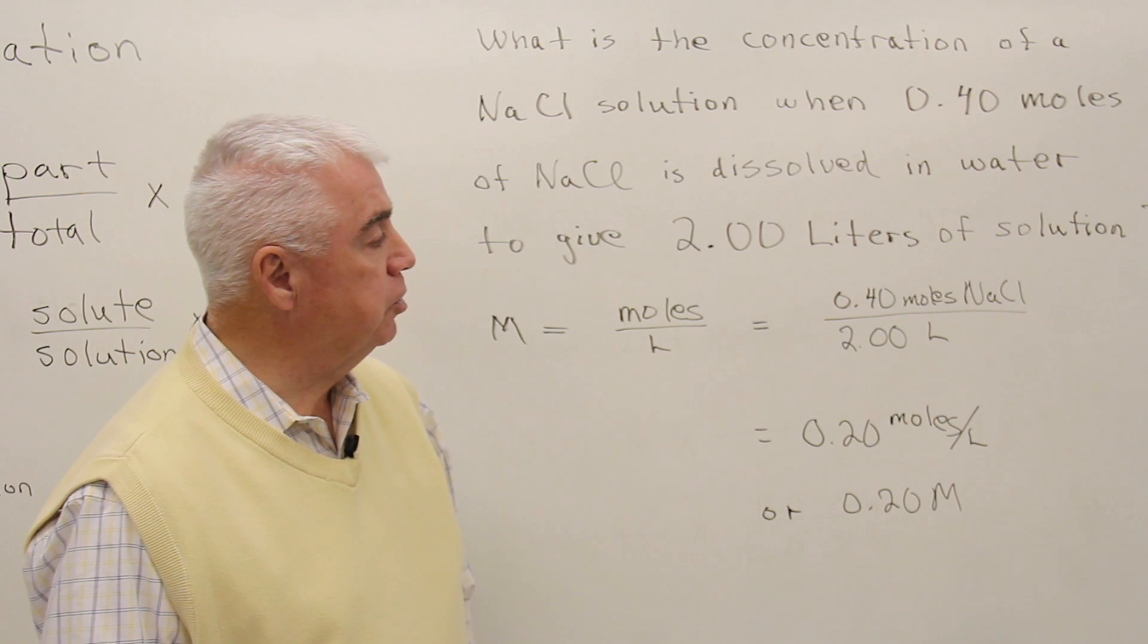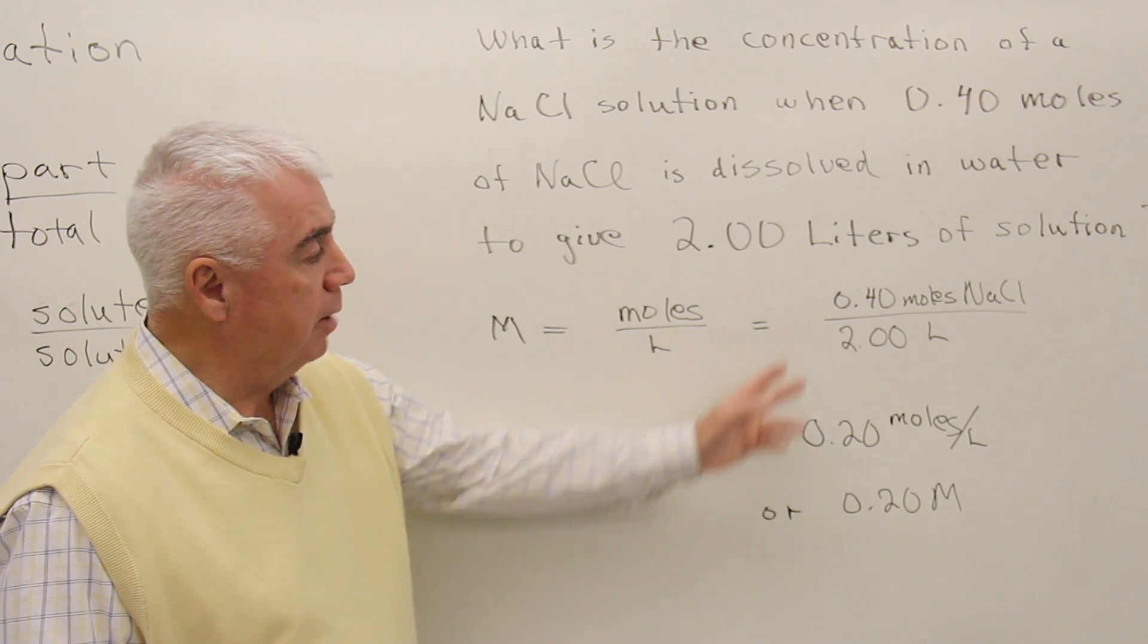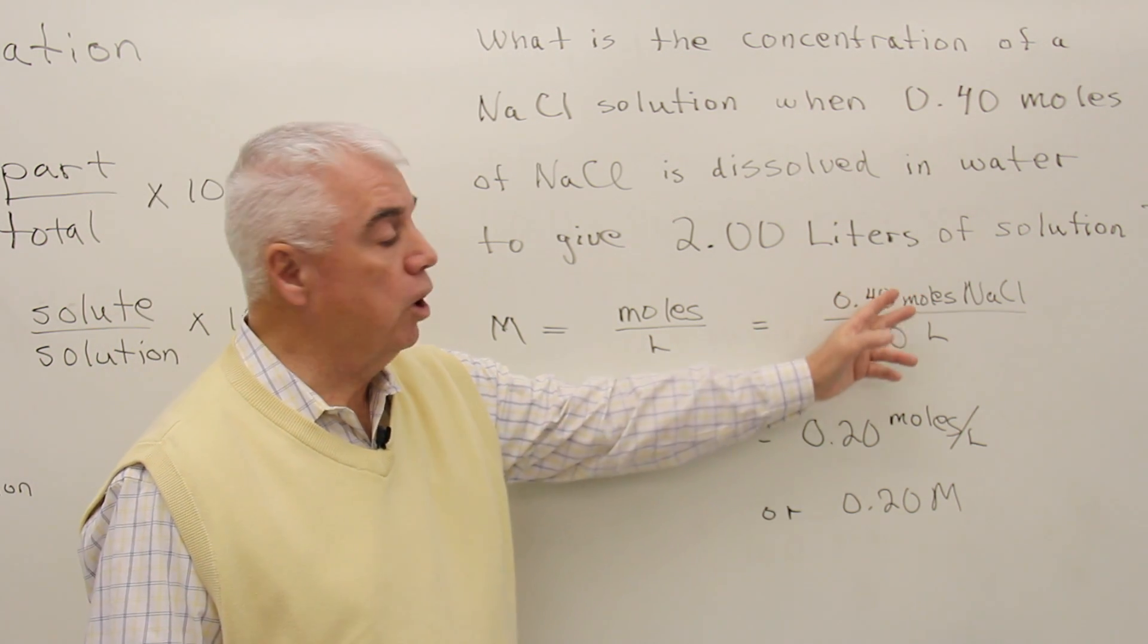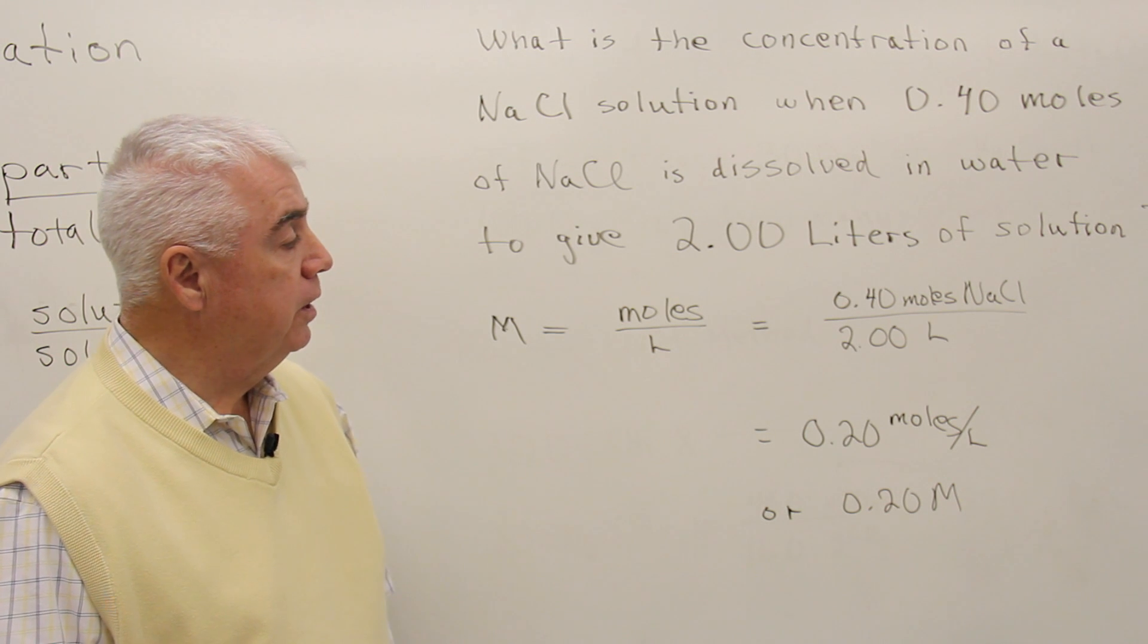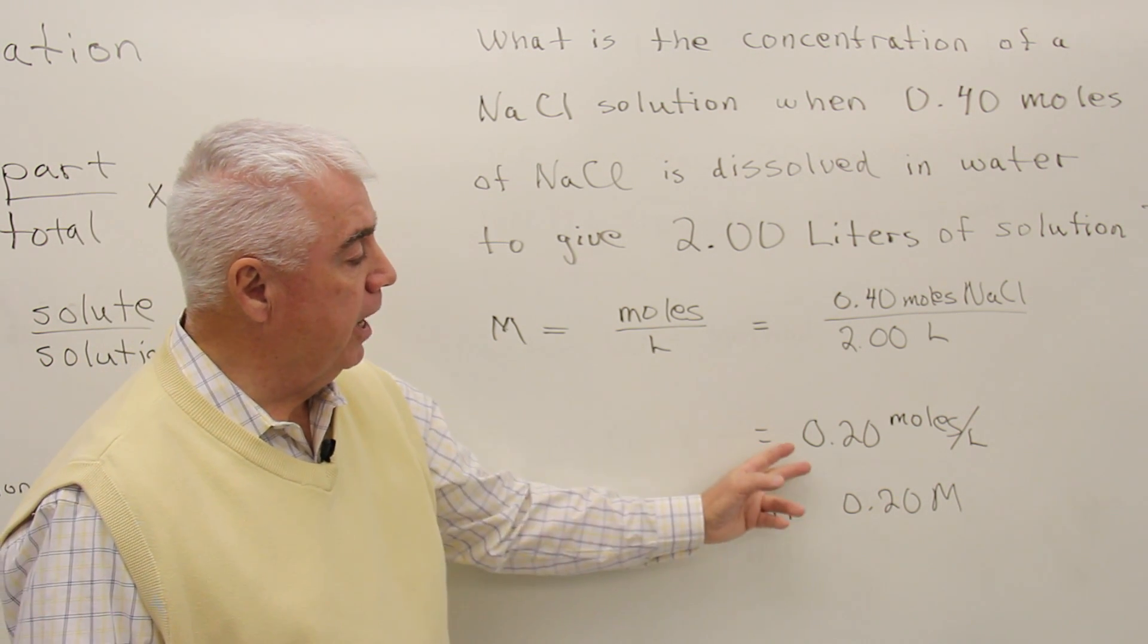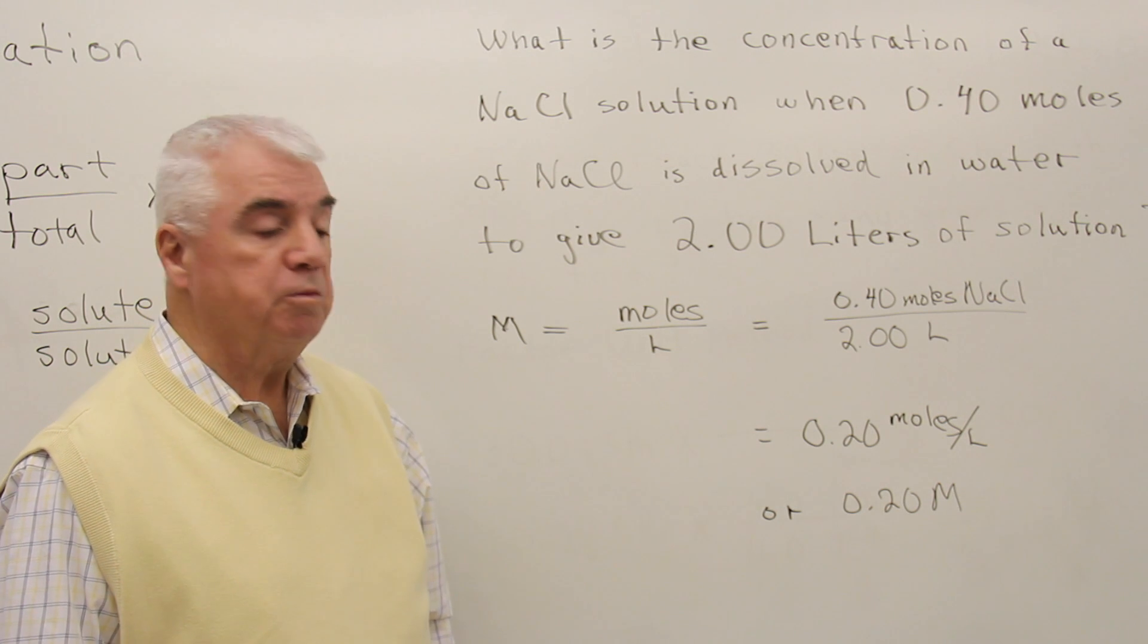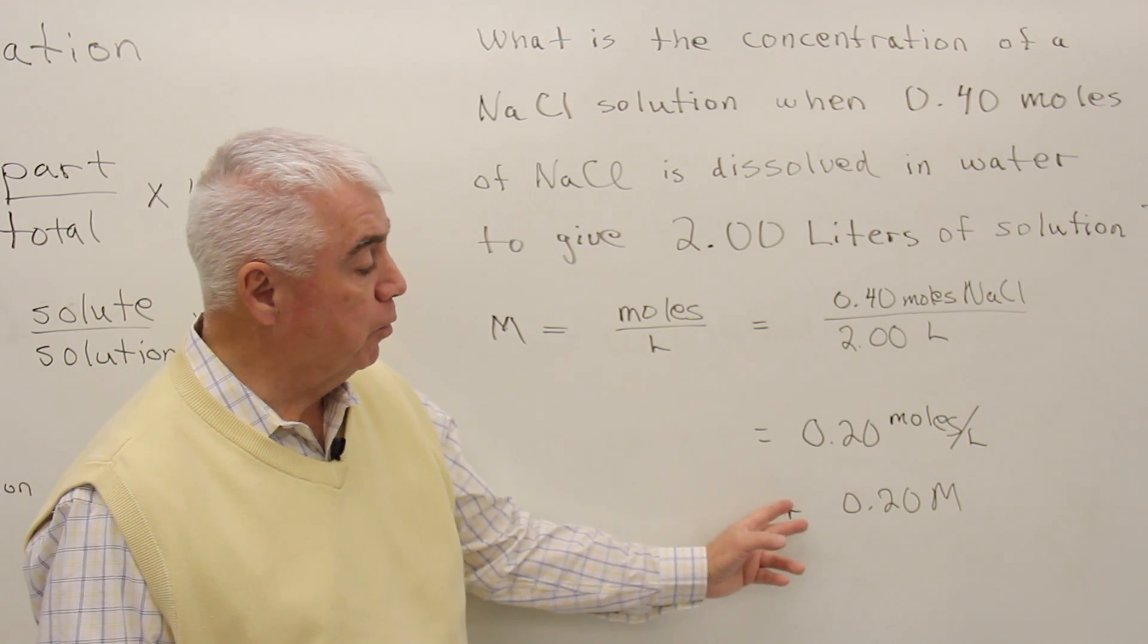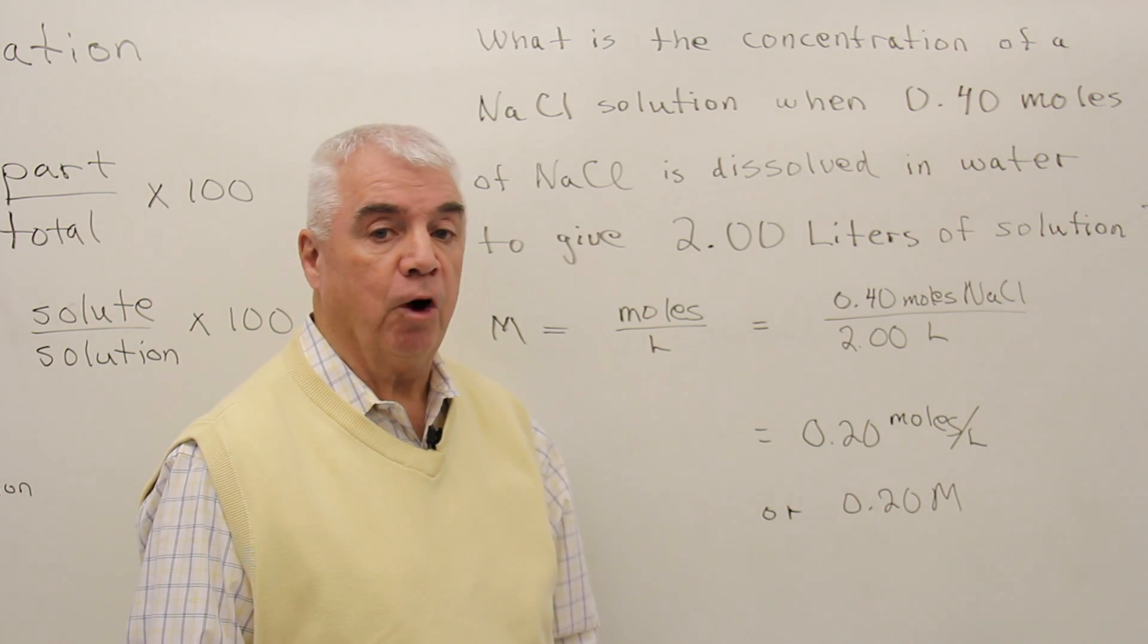Up here would go the moles of sodium chloride, down below the volume of the solution. And if we divide, we get 0.20 moles per liter, or in other words, 0.20 M.